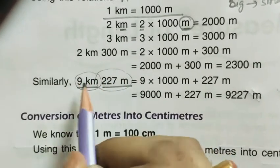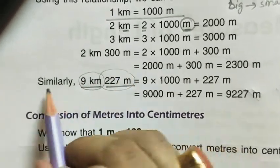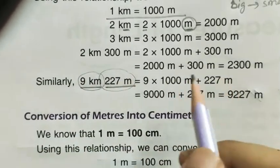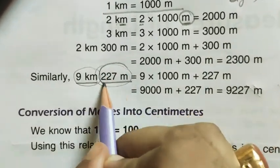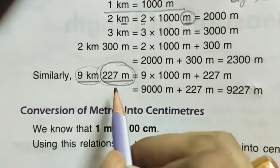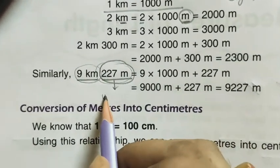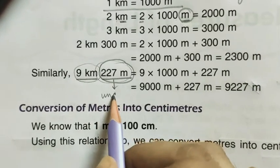This part is kilometers and this part is meters. If we have to convert everything to meters, the meter part remains unchanged — no change there. Only the kilometer part will change: convert the 9 kilometers into meters by multiplying by one thousand, giving 9000 meters, then add the remaining 227 meters.